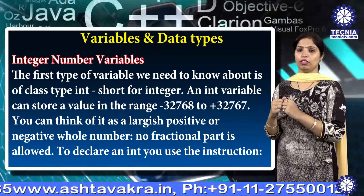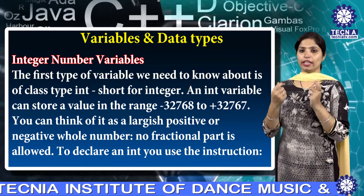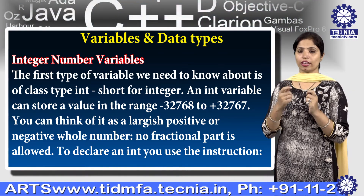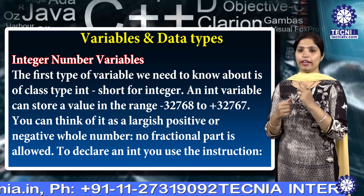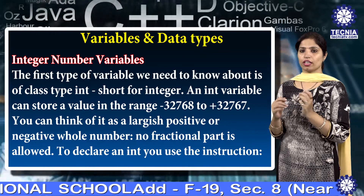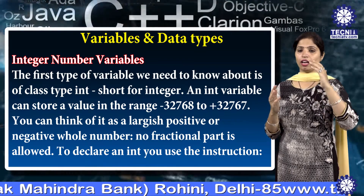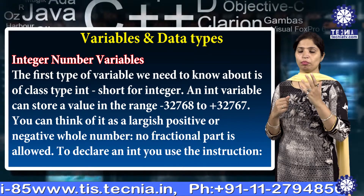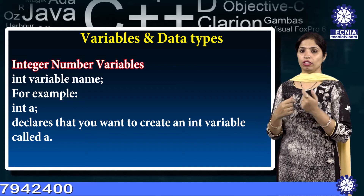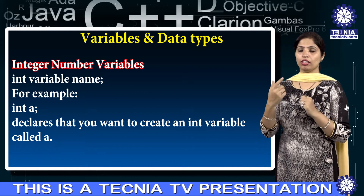The first type of variable is of the class type int, short for integer. An int variable can store a value in the range of -32,768 to 32,767. You can think of it as the largest positive or negative number with no fractional part allowed. To declare an int, you use the instruction: int, followed by the name of the variable — for example, int a — which declares that you want to create an integer variable called a.